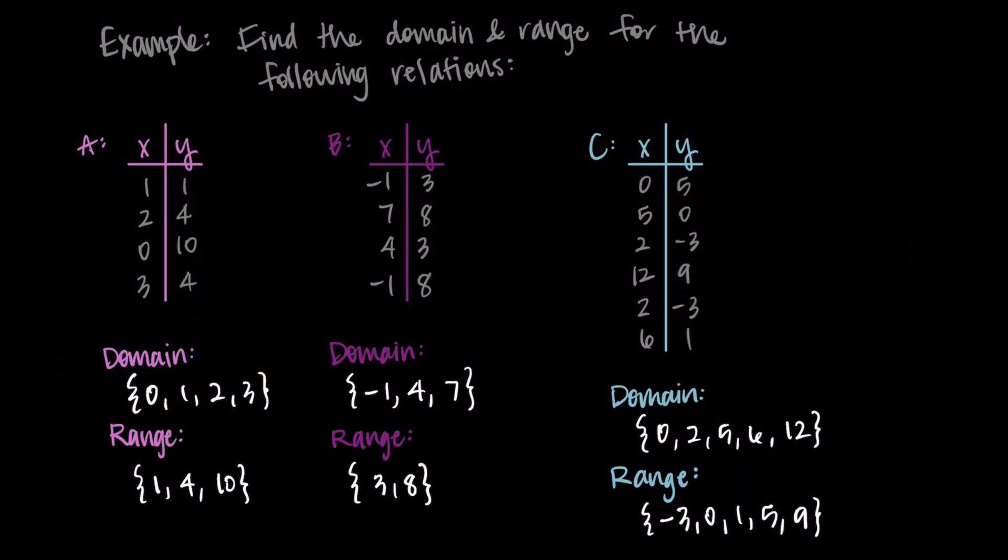All right. And that's what we have for finding domain and range with tables. So for domain, those are the possible inputs, which is typically the possible X values. And then for range, those are the possible outputs, which are typically the Y values. That's it for this one. Thanks so much for watching. And I will talk to you in the next one.